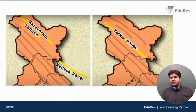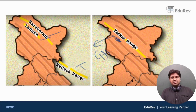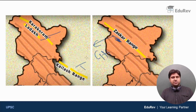The Zaskar Range, Ladakh Range and Karakoram Range are the main Trans-Himalayan ranges. The Kailash Range is completely present in the Tibetan region. Immediately to the north of the Great Himalayas, we have the Zaskar Range and the Ladakh and Karakoram Range. All these are part of Trans-Himalayas, including the Kailash Range, which is completely present in the Tibet region.